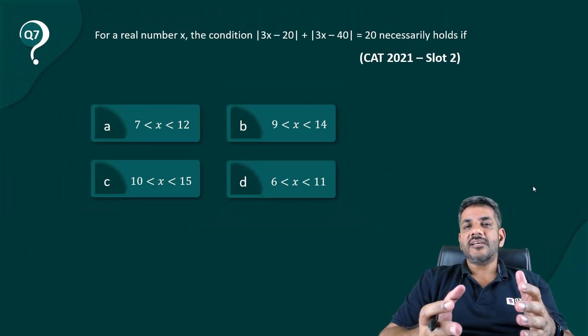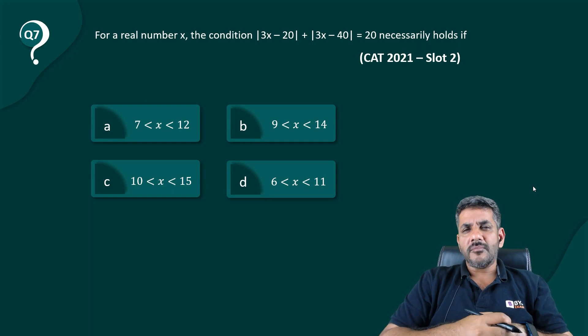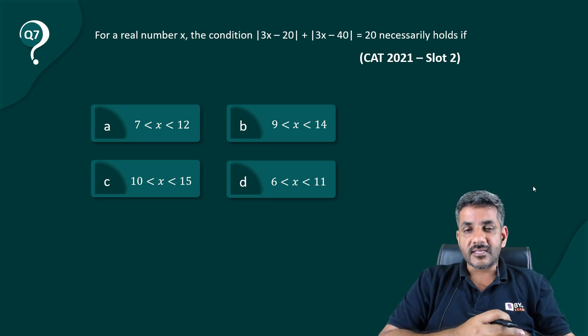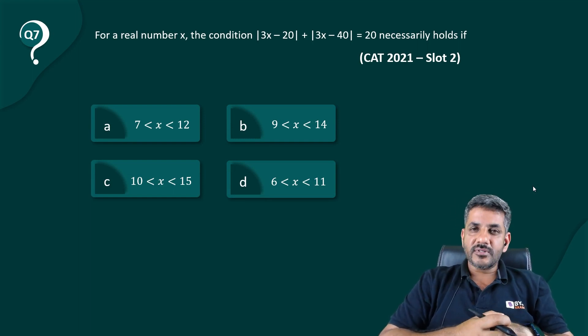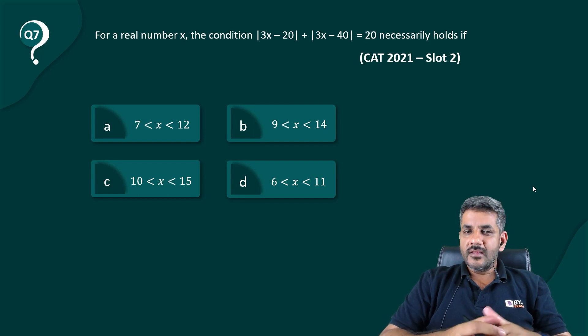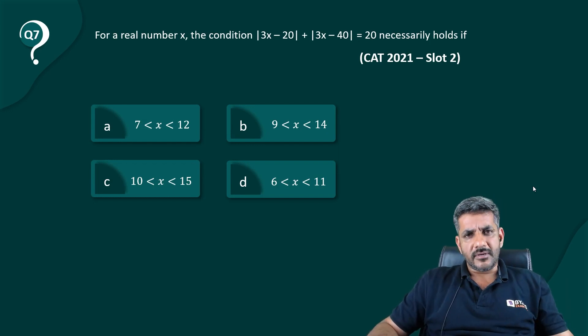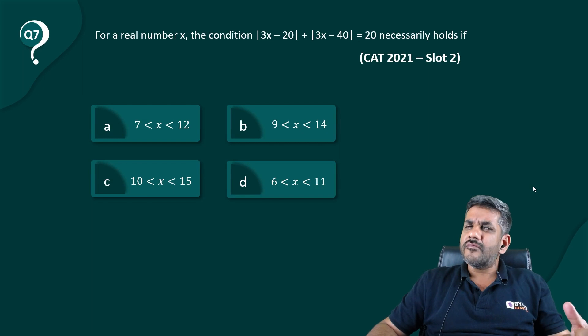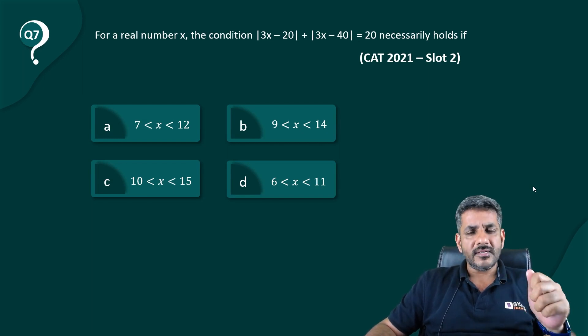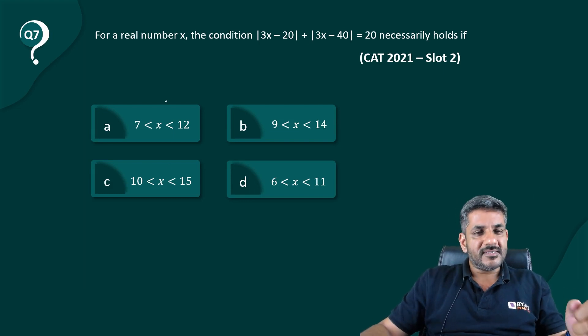Hello everyone. Once again we have question number 7 from this Quantua Searl series, and again a question from CAT 2021 slot 2. Let us have a look at this. It is a question of algebra, a topic generally we are not very comfortable with. How do we deal with this question in an aptitude way? That is what we are discussing today.